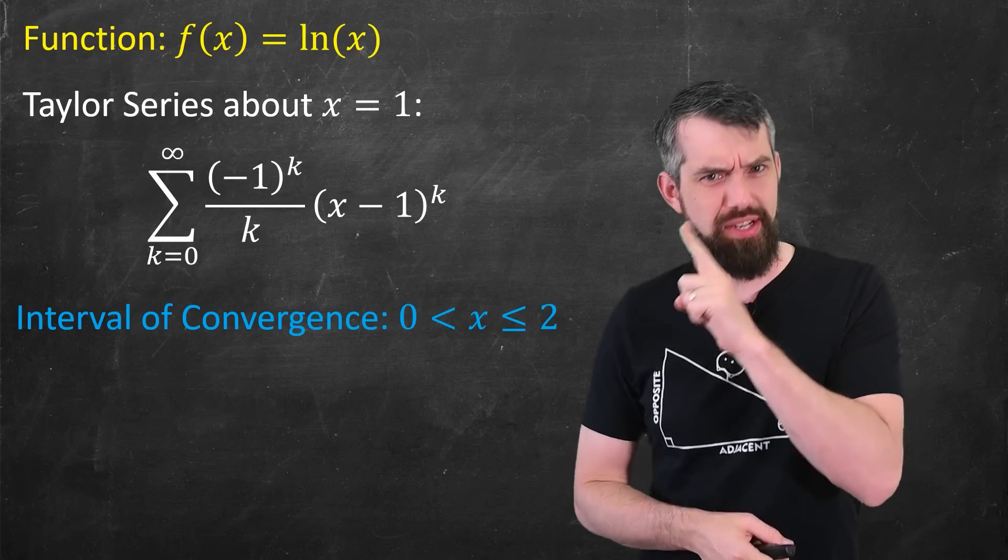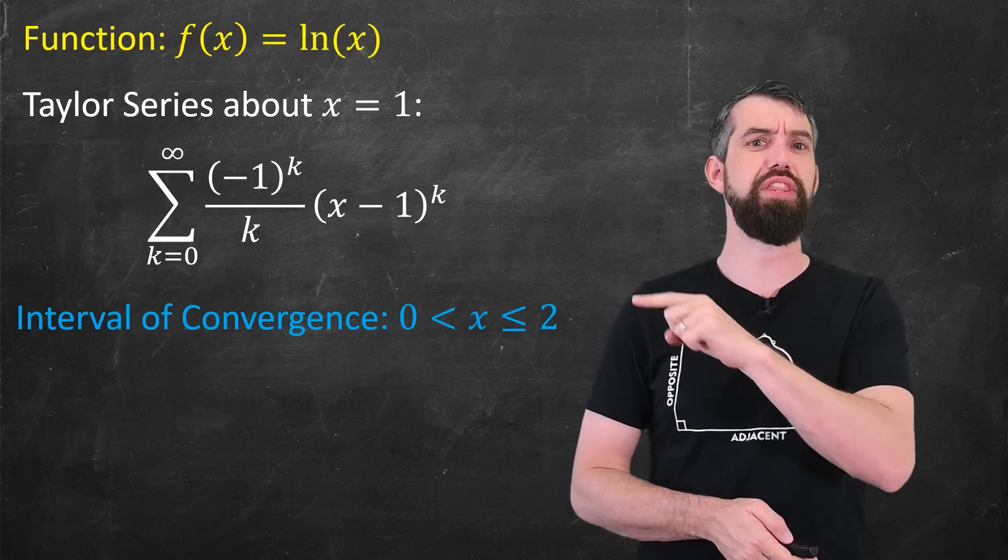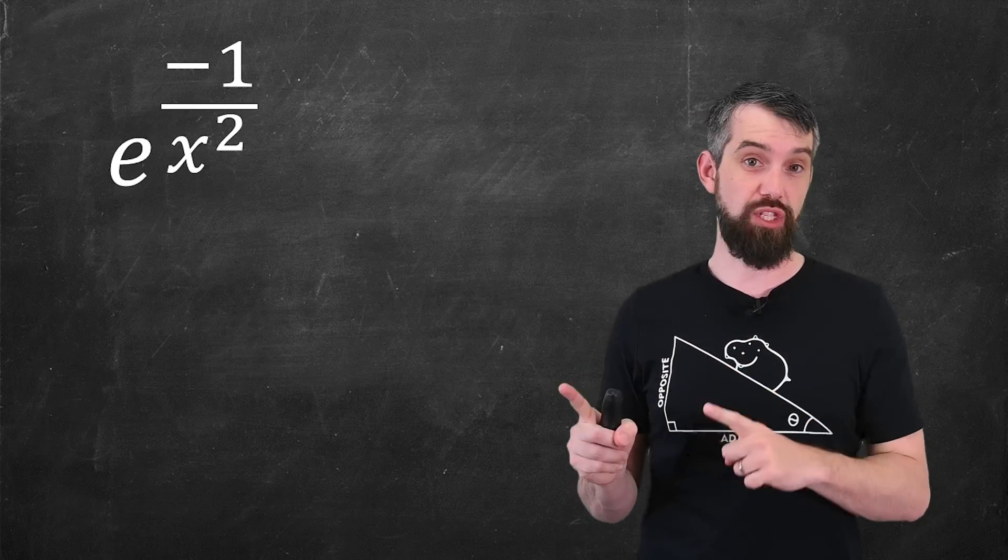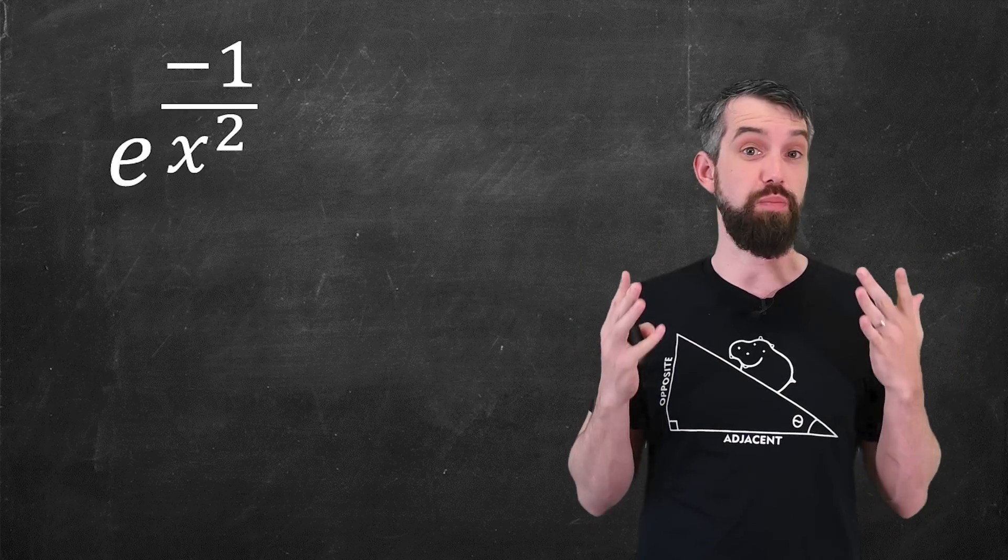Let me give, actually, a different function to illustrate the point a little bit more clearly. I'm going to consider the function e to the minus 1 over x squared. Looks like a perfectly reasonable function.